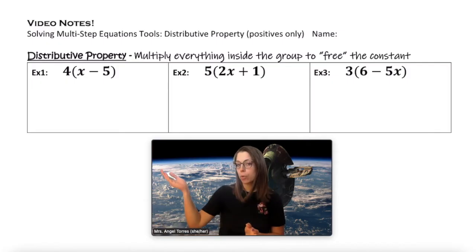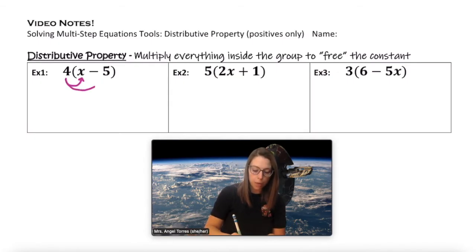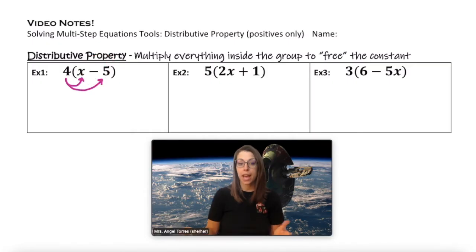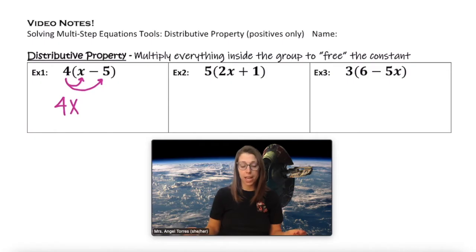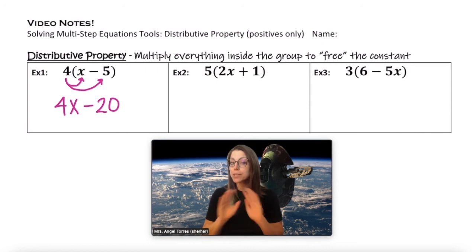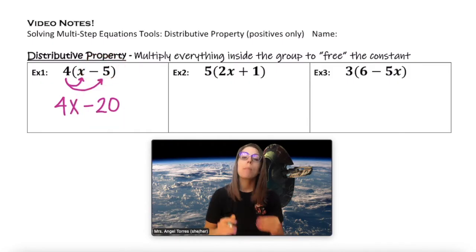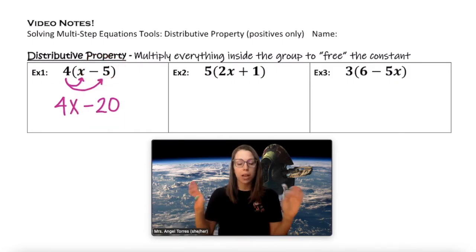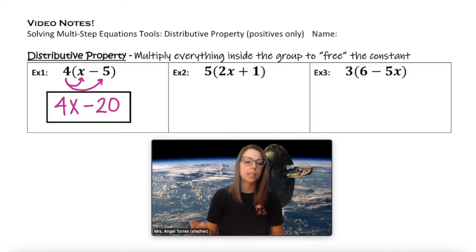Looking at expression number one, we have four times the group of x minus five. We're going to multiply everything inside of the group by four and that will free our constant out of the group. So starting with x, four times x is just 4x, and four times a minus five becomes a minus 20. Now the group is gone, my constant has become a minus 20 whereas it used to be a minus five, but I now have two terms and my constant is free. The simplified version of expression number one is 4x minus 20.